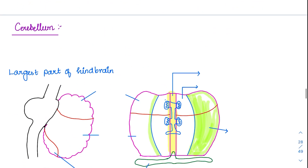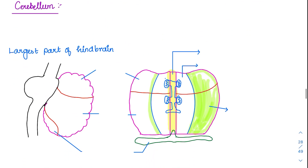Now coming to the other important organ involved in movements, that is the cerebellum. One important feature difference between the cerebellum and basal ganglia disorder: in Parkinson's, the patient can have a resting tremor. But in a cerebellar disorder, the patient will have tremors when trying to do movements. That is called intentional tremor. This is one classical difference between basal ganglia disease and a cerebellar disorder.